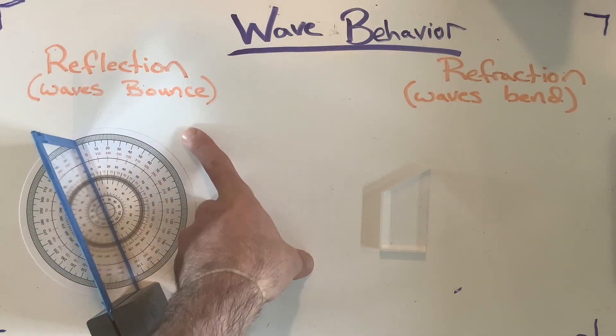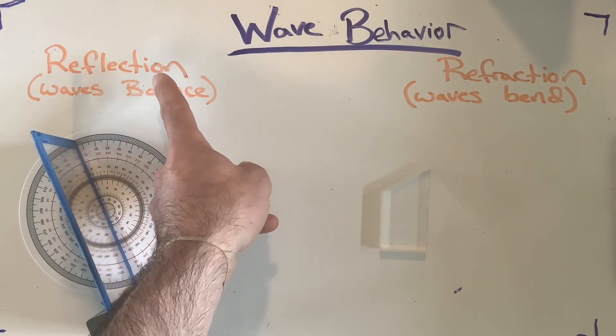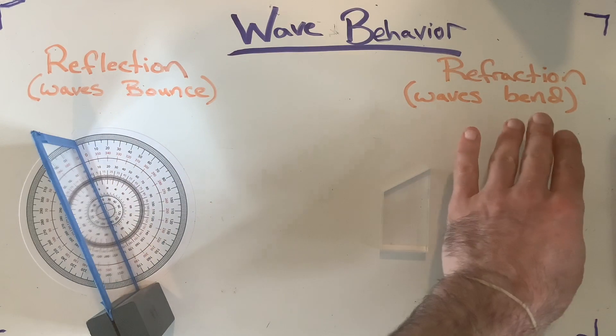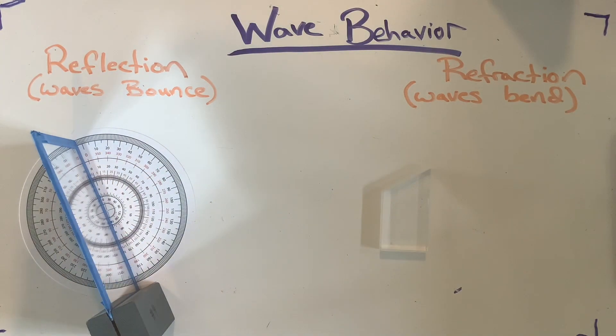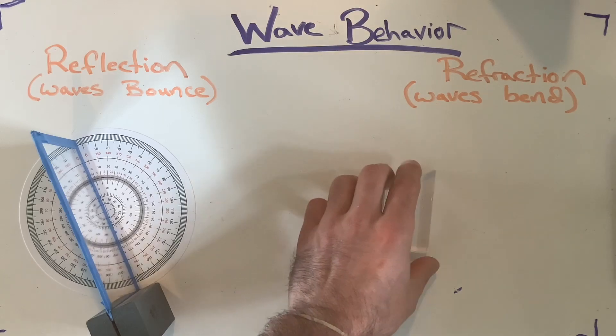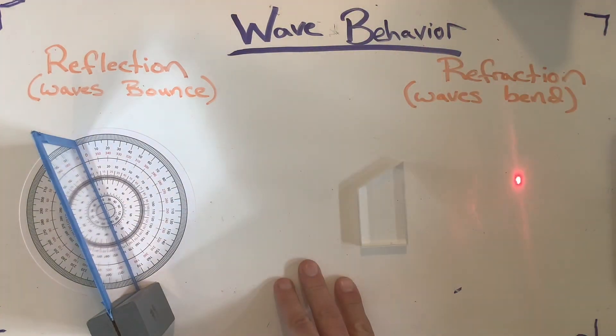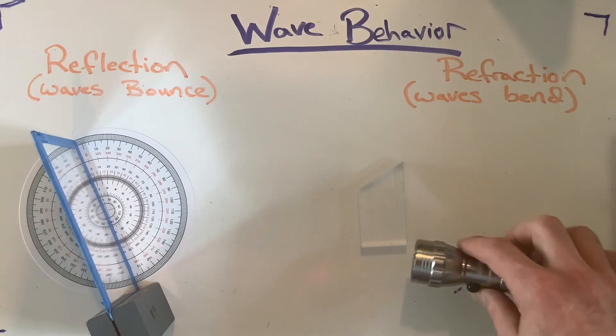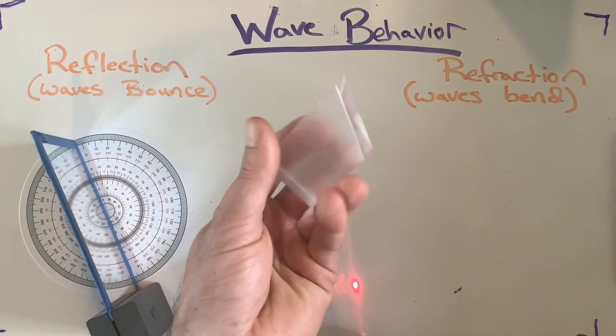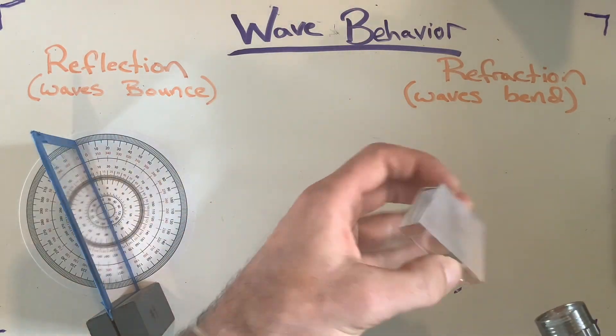So not only can waves bounce through the process of reflection, they can also bend through a process called refraction. Let's see if I can get this to work for you all. So typically, like I said, waves, they like to travel in a straight line. So if I've got my laser here, it's just going to travel along in a nice, perfectly straight line. And if it hits something that it can still pass through, so this light wave can pass through this glass, you can see it still going through and hitting my hand here.